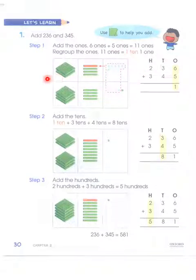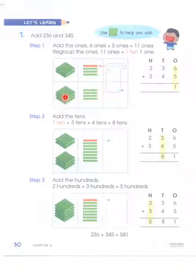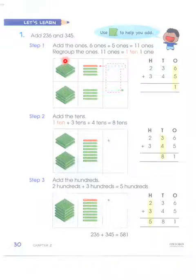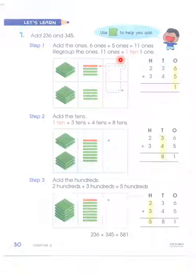Okay, this is the same way. So we have to add 236 and 345. Add the ones: 6 ones plus 5 ones is equal to 11 ones. Regrouping the ones — that means 11 is 1 ten and 1 one.